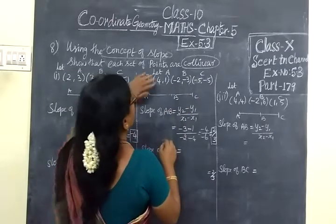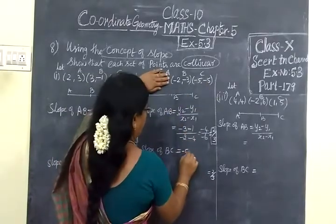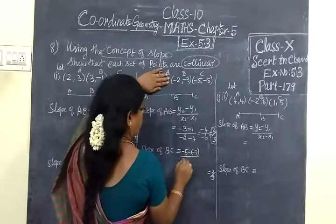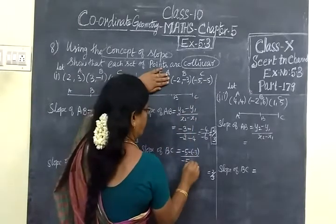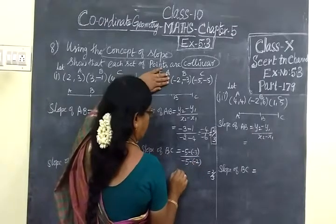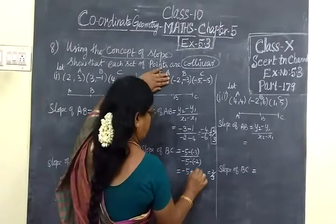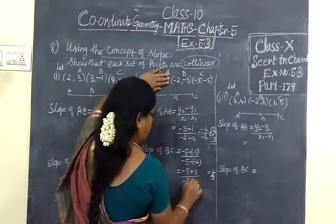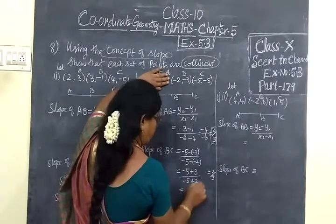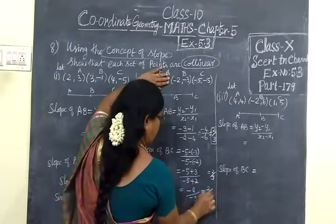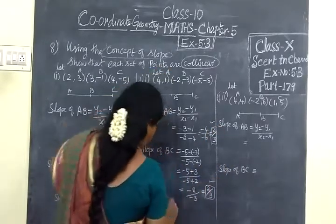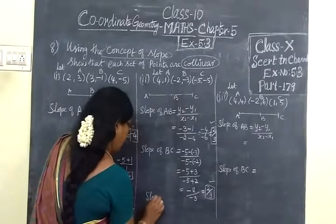Slope of BC is equal to Y2 which is minus 5 minus Y1 minus 3, by X2 which is 1 minus X1 which is minus 2. This is equal to minus 5 plus 3 by 1 plus 2. So minus 2 by 3. So here also 2 by 3.